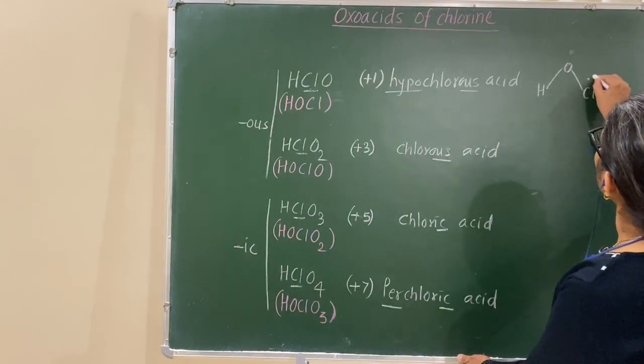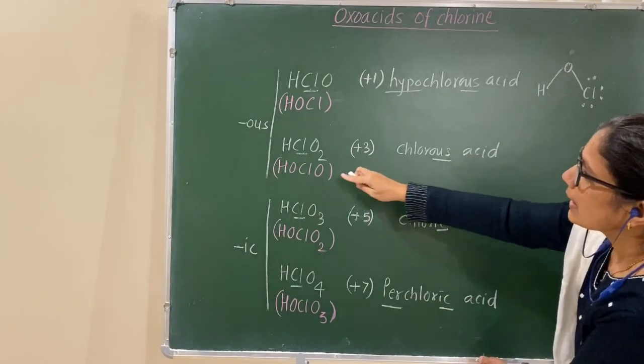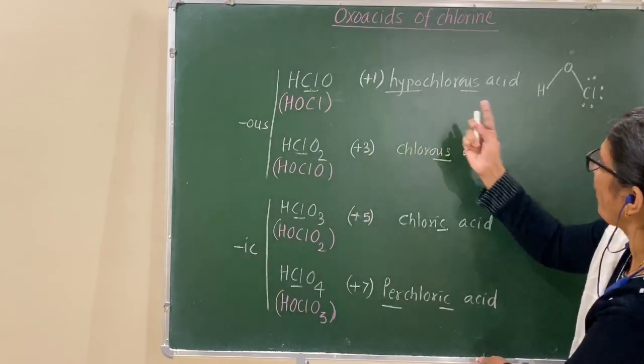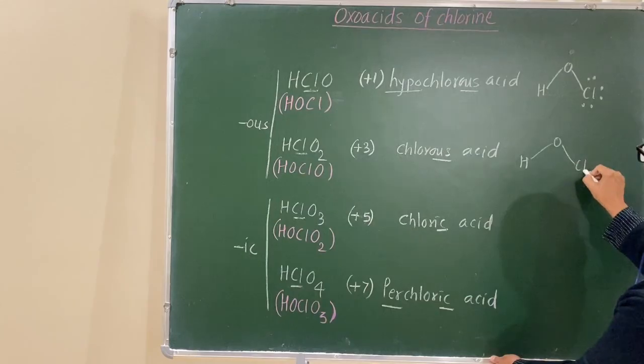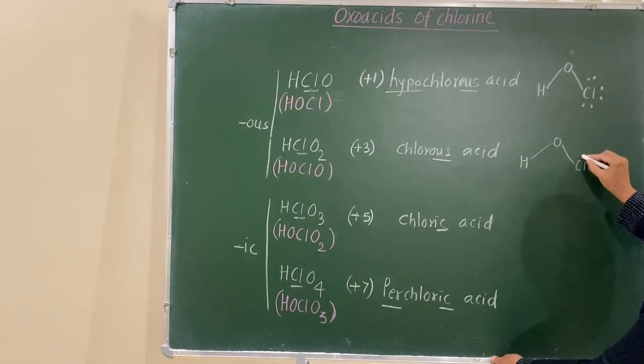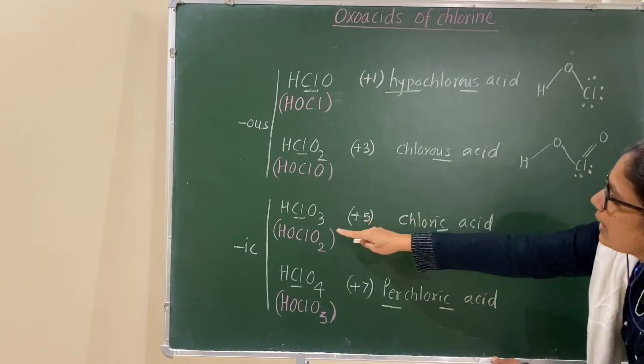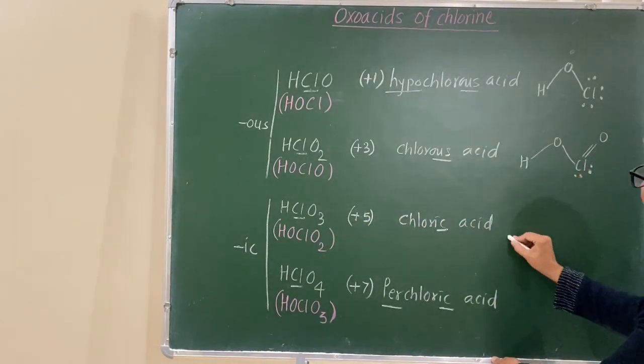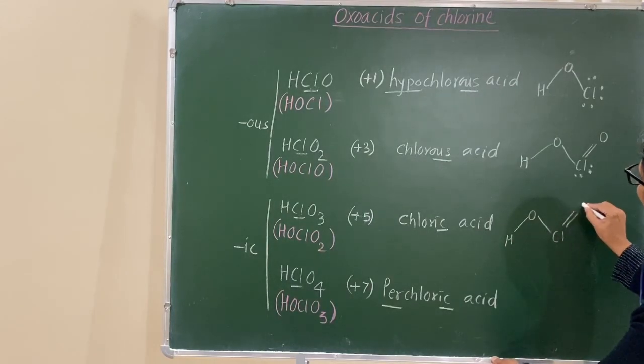HOCl with three lone pairs. Now, here, HOClO2. One lone pair. Next one, HOClO2.